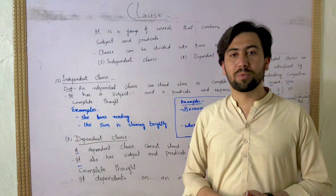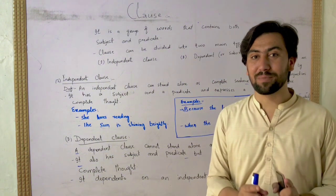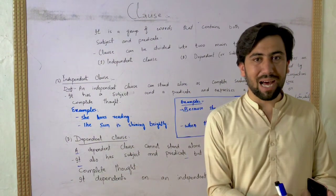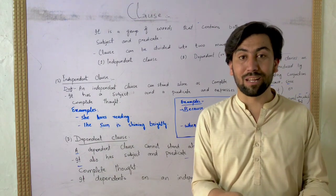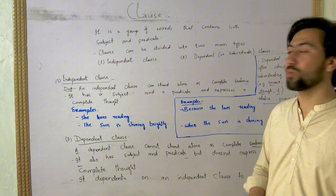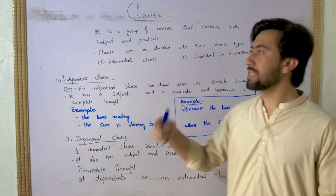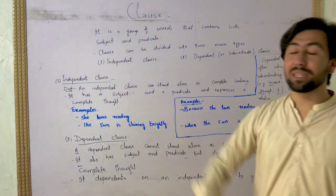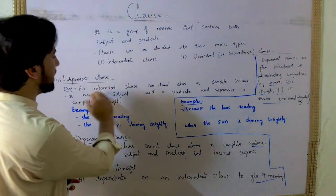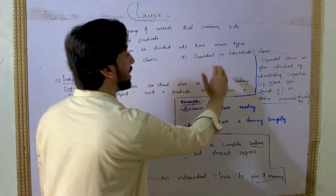The first part is that the clause is a part of a sentence. The second part is the dependent clause. What is an independent clause? An independent clause can stand alone as a complete sentence. You can remember that the independent clause is a complete sentence.